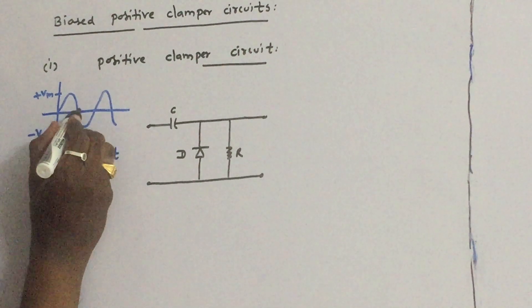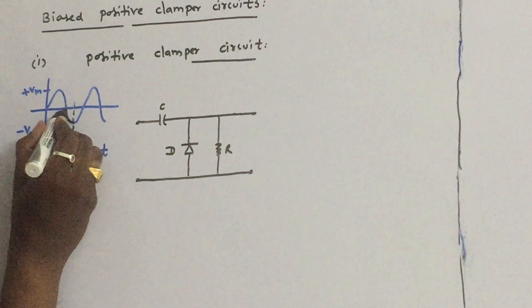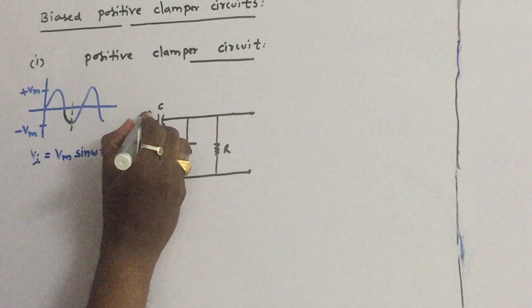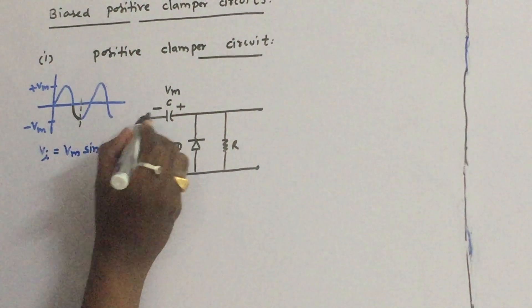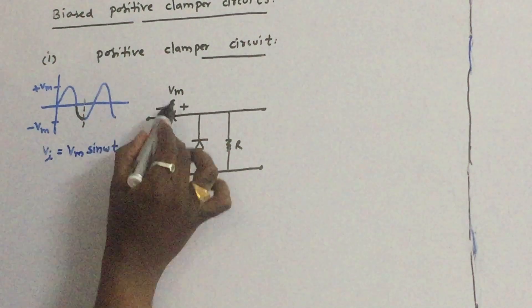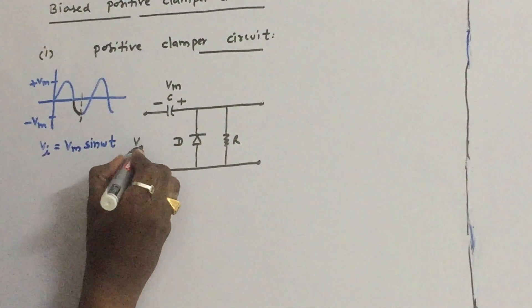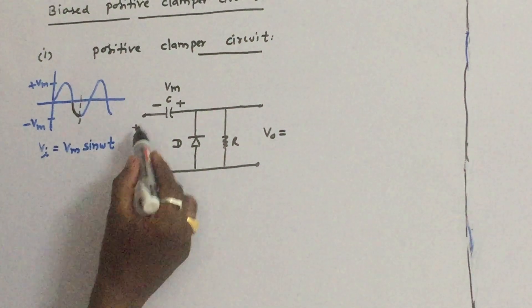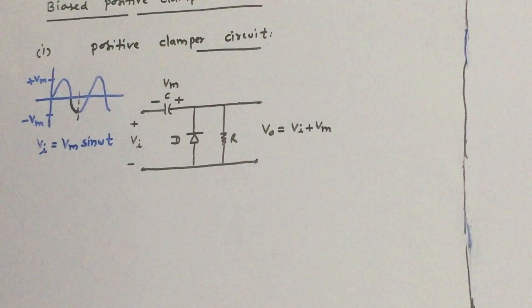During the first quarter of the negative half cycle, the diode gets forward biased. Therefore, the capacitor quickly charges to Vm with this polarity. Once the capacitor gets charged to Vm with this polarity, the capacitor voltage remains fixed during the subsequent cycles. The output voltage is simply, applying KVL: Vi plus Vm.